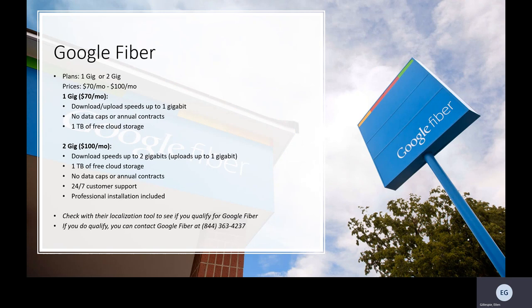Google Fiber offers two plans — 1GB and 2GB — with prices at $70 or $100 a month. The 1GB plan offers download and upload speeds up to 1GB, with no data caps or annual contracts, and 1TB of free cloud storage. At $100 a month, the 2GB plan offers download speeds up to 2GB and uploads up to 1GB, with 1TB of free cloud storage, no data caps or annual contracts, 24/7 customer support, and professional installation.